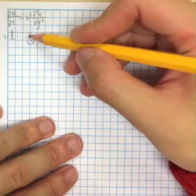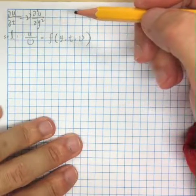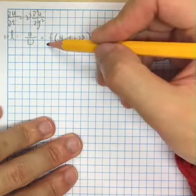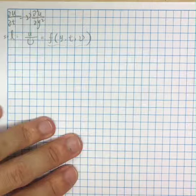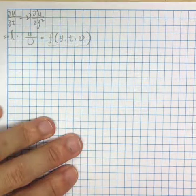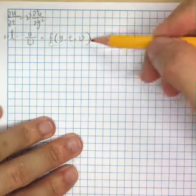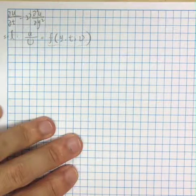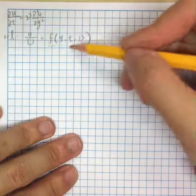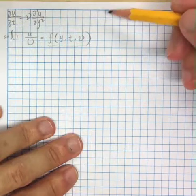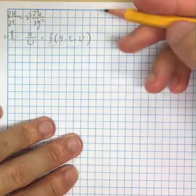Note that u over capital U is a dimensionless number, so this function should give us a dimensionless number. According to the Buckingham Pi theorem, this function should not be any random function, but a function of a dimensionless number formed by the three variables. So how can we form a dimensionless variable from the three variables?